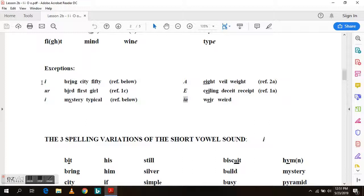And here are the exceptions. As an I sound in bring, city, fifty. As an ER sound in bird, first, girl. And the Y as an I sound in mystery, typical. The EI as an A sound in eight, veil, weight. The EI as an E sound in ceiling, deceit, receipt. And as a compound vowel, the EI in we're and weird.